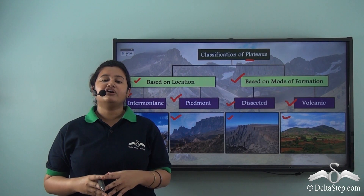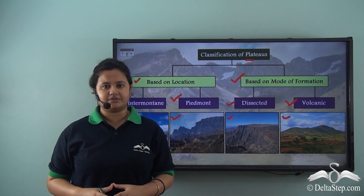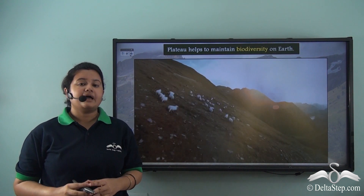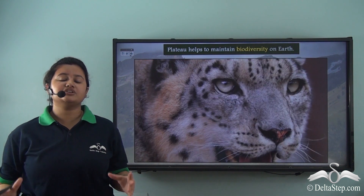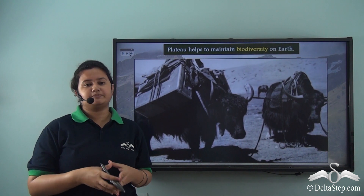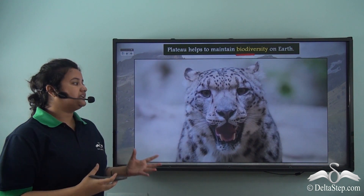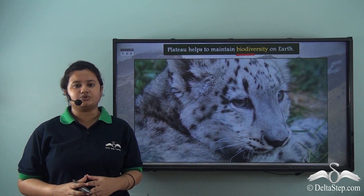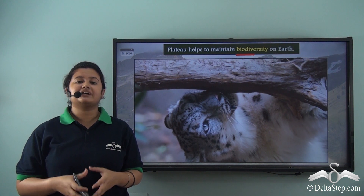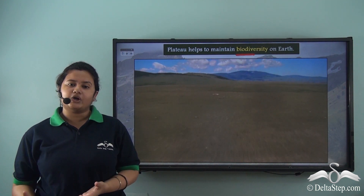Now let us discuss the importance of plateaus. Plateaus have varied climatic conditions and diverse topographical features — from volcanic to mountainous — and therefore can support a diverse range of species. Plateaus are considered hubs of biodiversity. For example, different kinds of species are found in the Tibetan Plateau, most notably the snow leopard and yak, which have adapted to the climatic conditions of this plateau region. Thus plateaus are important for maintaining biodiversity on earth.